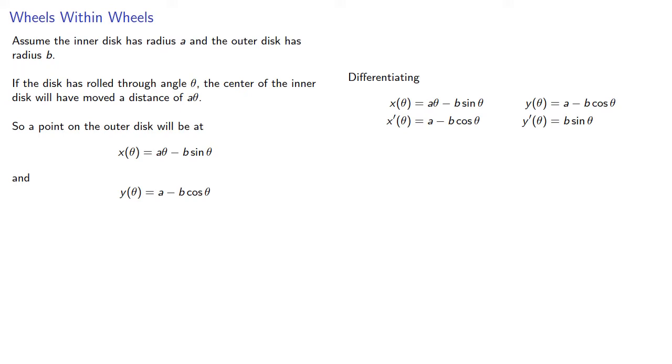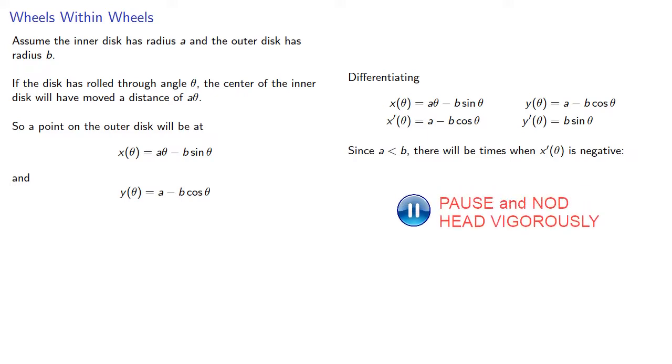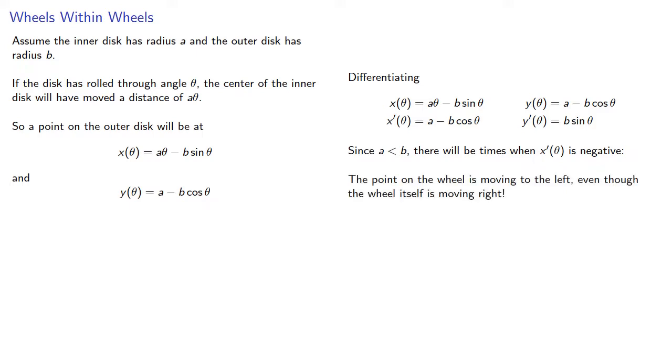a is less than b and so there will be times when x' is negative. And this means the point on the wheel is moving to the left even though the wheel itself is moving to the right.